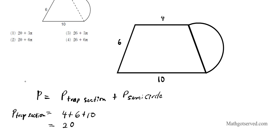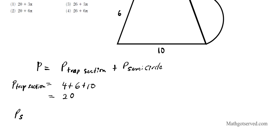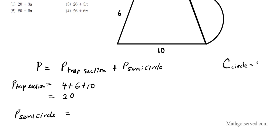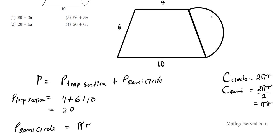Now for the semicircle portion. The circumference of a full circle is 2πr, so the arc length of a semicircle is half of that: πr. The question is: what is the radius? Since this is an isosceles trapezoid, the two slanted sides are congruent, meaning the top base — which serves as the diameter of the semicircle — is 6 units long.